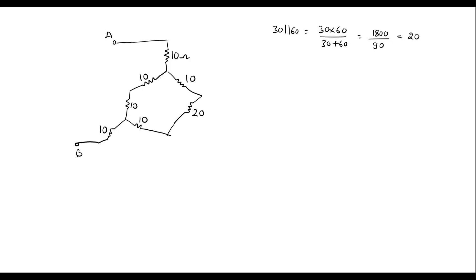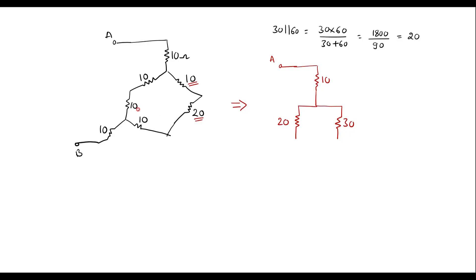Now let me simplify this further. We can observe that this 10 and this 20 are in series, and this 10 and this 10 are in series. The equivalent circuit has node A with 10 ohm. These two in series give a value of 30 ohm. Then 10, 20, and 10 are in series giving a value of 40. This 10 will be connected to node B.